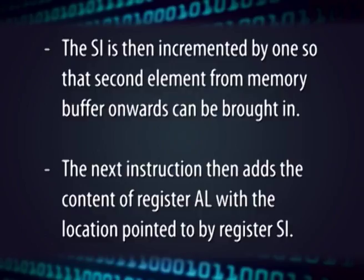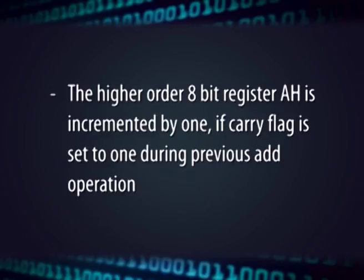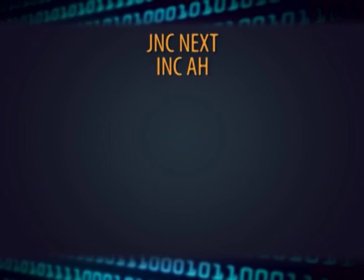The next instruction adds the contents of register AL with the memory location pointed to by register SI. The higher-order 8-bit register AH is incremented by 1 if the carry flag is set to 1 during the previous ADD operation. That means the program logic is: we add the contents of the memory buffer one by one to register AL. Since register AL is only 8 bits, it cannot hold a 16-bit value, and the final result of summation of 200 elements may be 16 bits total. Therefore, if a carry is generated during the addition operation, the contents of register AH are incremented by 1.